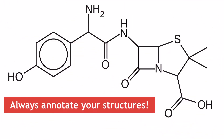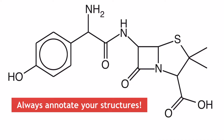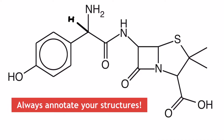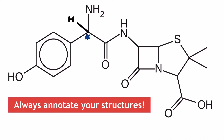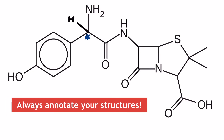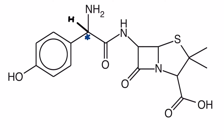My best exam strategy for questions like this one is to always label and annotate your structures whilst walking through them left to right, carbon by carbon. You may even want to consider ticking off carbons to remind yourself you've checked them, so that you don't second guess yourself later.